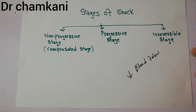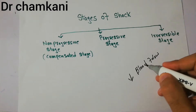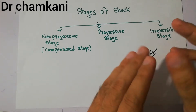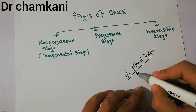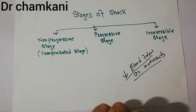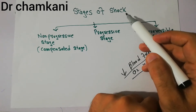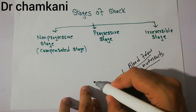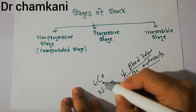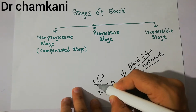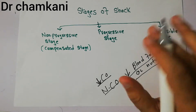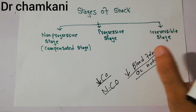In the last lecture we defined shock as basically the decreased or inadequate blood flow to the tissues, resulting in decreased supply of oxygen or nutrients to body organs. We discussed that shock could be due to decreased cardiac output or normal cardiac output, and classified the different types accordingly.